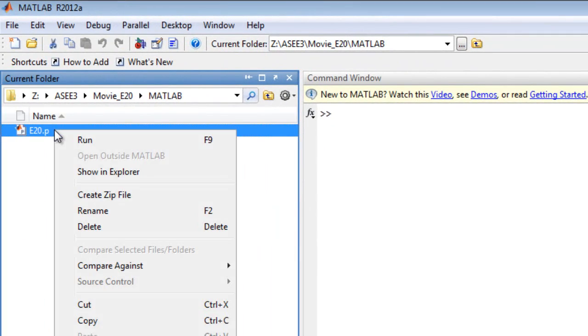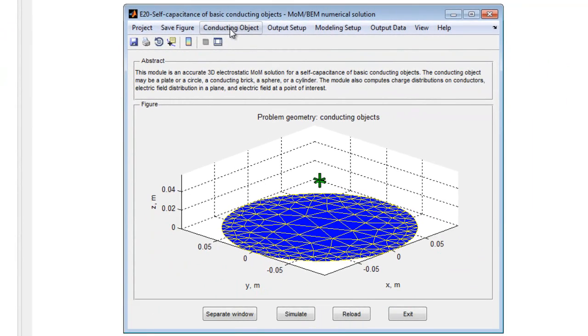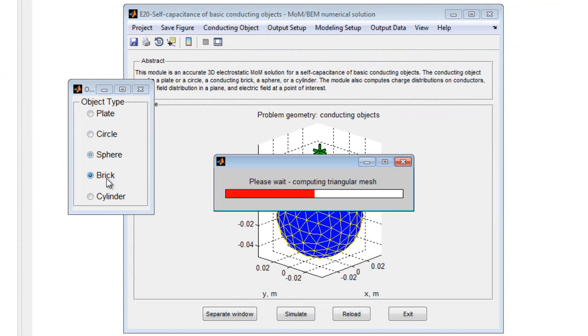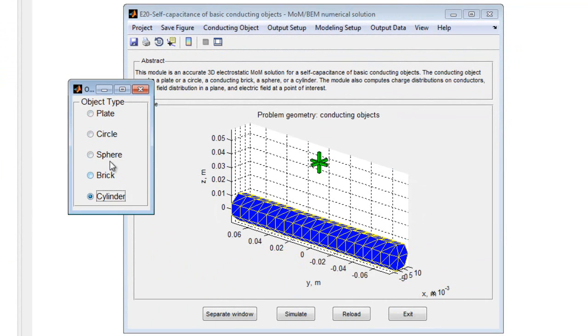To begin, run the module in MATLAB and the default geometry is displayed. There are several object types available, including plates, circles, spheres, bricks, and cylinders.